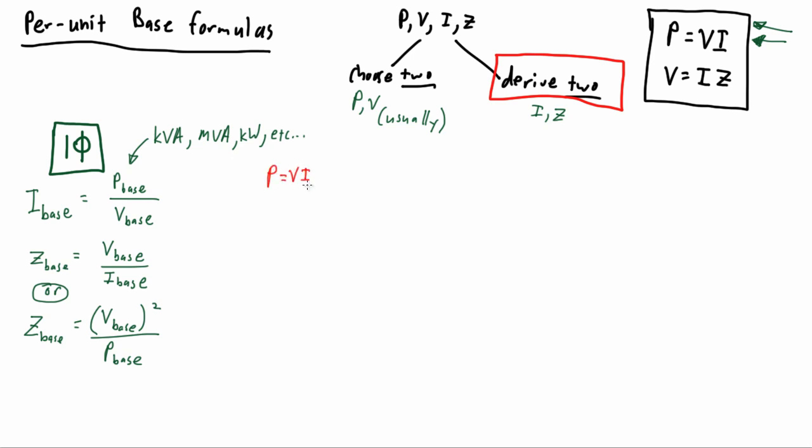We'll just go through the algebraic spelling out of this formula to demonstrate its roots in our two fundamental formulas. You can see that we've taken the two standard equations and rearranged them algebraically to solve for current. Since both solve for current, we can combine them algebraically.